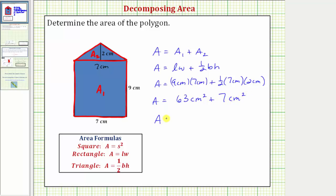So we have a total area for the polygon of sixty-three plus seven, or seventy square centimeters.